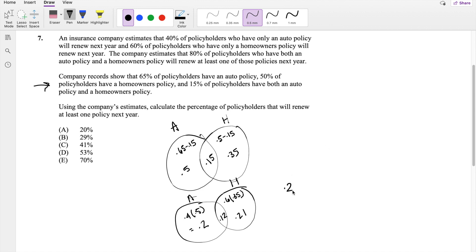it's going to be equal to 0.2 plus 0.12 plus 0.21, which is equal to 0.53, our answer D.